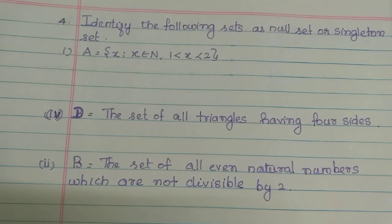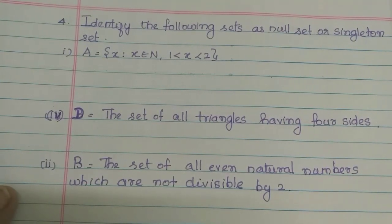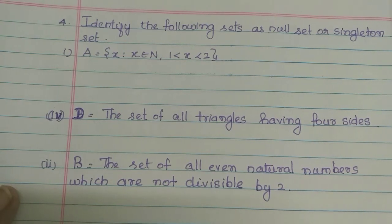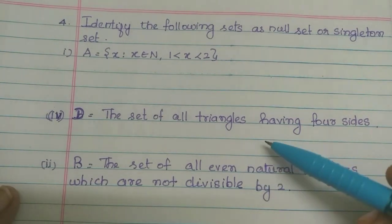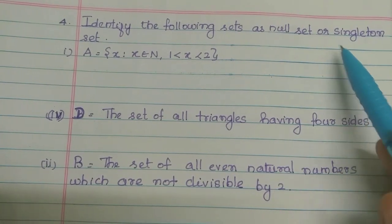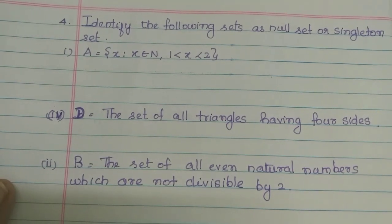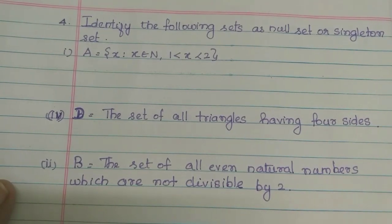Students, in this video we will identify the following sets as Null Set or Singleton Set. A Null Set is a set with no elements, so it is a Null Set. A Singleton Set has exactly one element, so it is a Singleton Set.